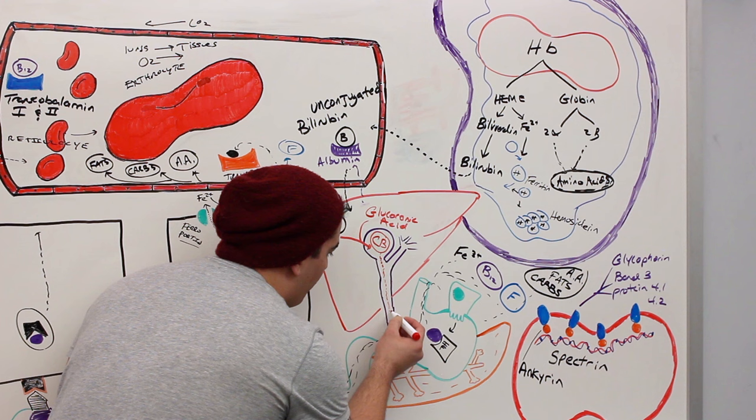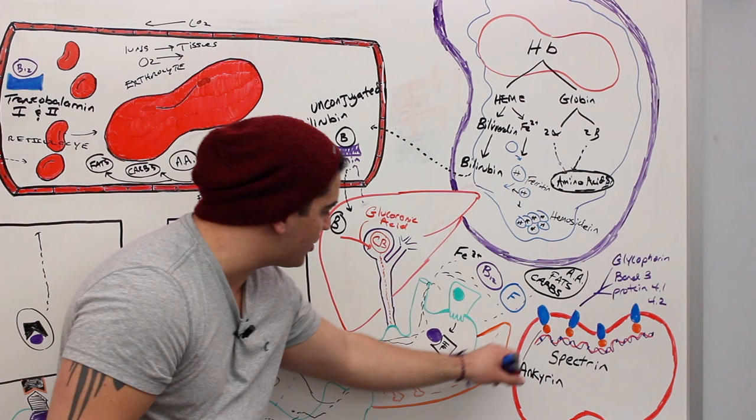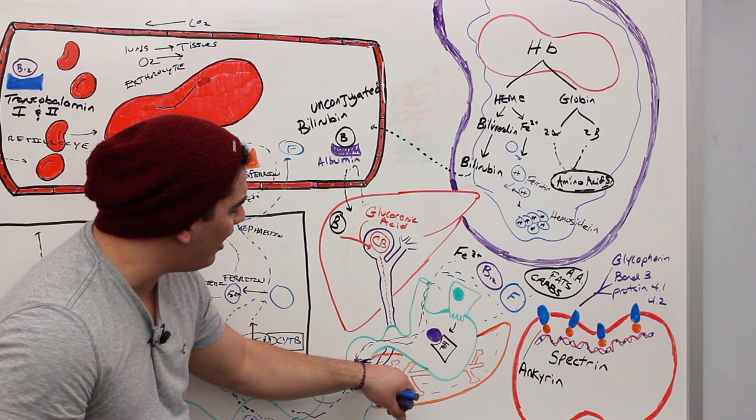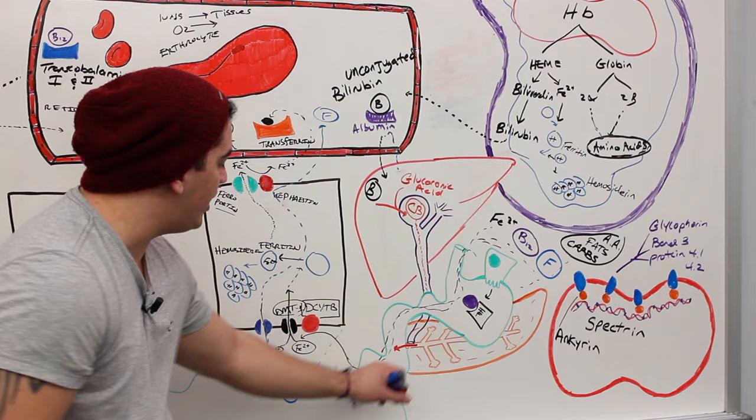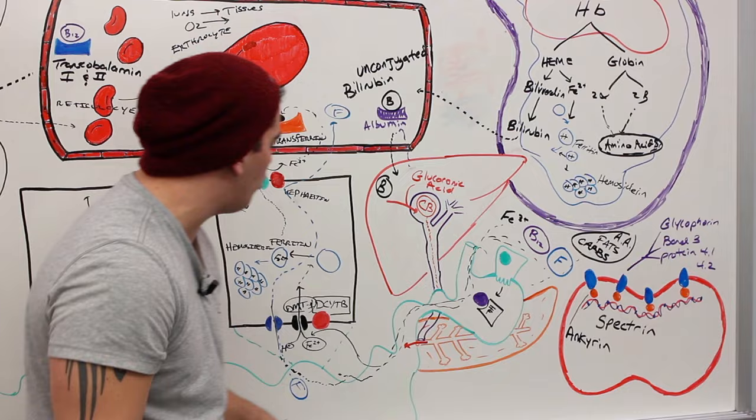The bile travels down the common bile duct. The pancreas has a main pancreatic duct, and the common bile duct and main pancreatic duct fuse together to form the hepatopancreatic ampulla. This pushes bile out into the duodenum — where iron, B12, and folate are also present.